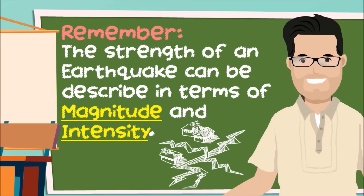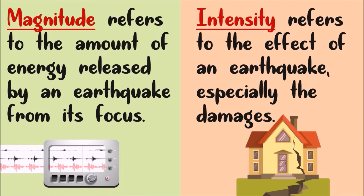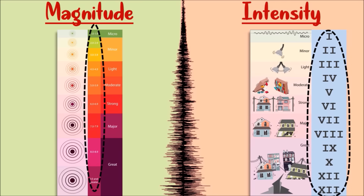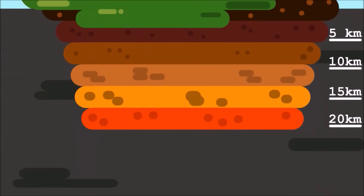The strength of an earthquake is described in terms of magnitude and intensity. What is the difference between magnitude and intensity? Magnitude refers to the amount of energy released by an earthquake from its focus. Intensity refers to the effect of an earthquake, especially the damages. Magnitude is written in numbers with decimals while intensity is written in Roman numerals. In measuring the magnitude of an earthquake, it is important to locate the focus.